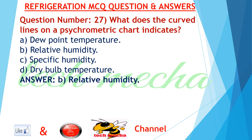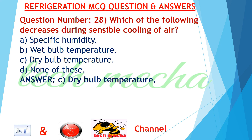Question number 27: What do the curved lines on a psychrometric chart indicate? A. dew point temperature, B. relative humidity, C. specific humidity, D. dry bulb temperature. Answer: B. relative humidity.